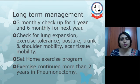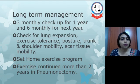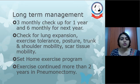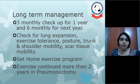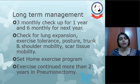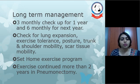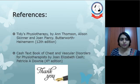For long-term management, 3-monthly checkups are required for the first year and 6-monthly for the next year, so the patient needs to come for regular follow-up for 2 consecutive years. At each checkup, we assess lung expansion, exercise tolerance, posture, trunk and shoulder mobility, and scar tissue mobility, and plan treatment accordingly. A home exercise program should be set, or the patient should be asked to join pulmonary rehabilitation. In the outpatient rehab team, exercise should be continued for more than 2 years in cases of pneumonectomy.